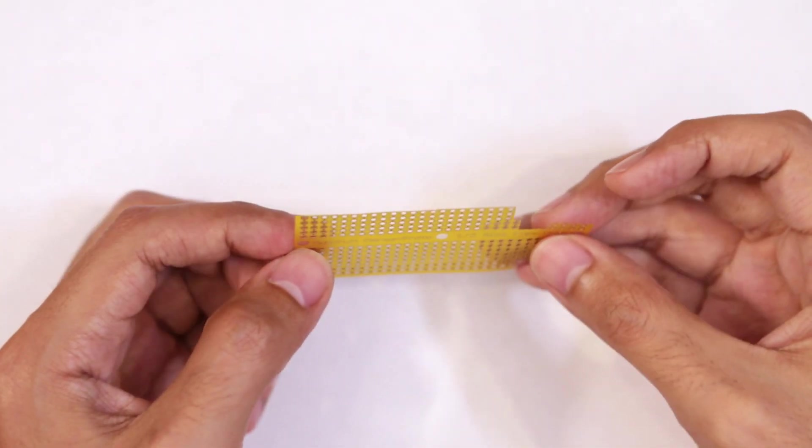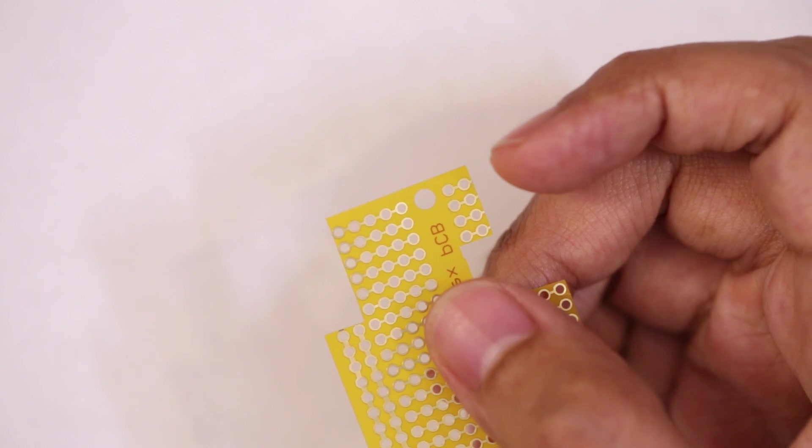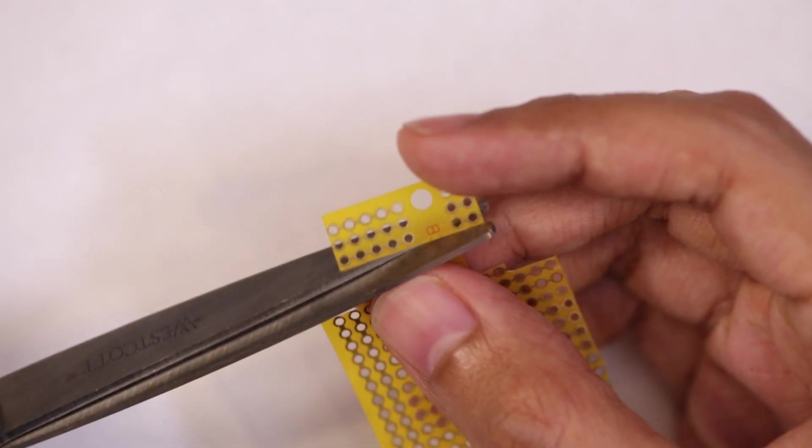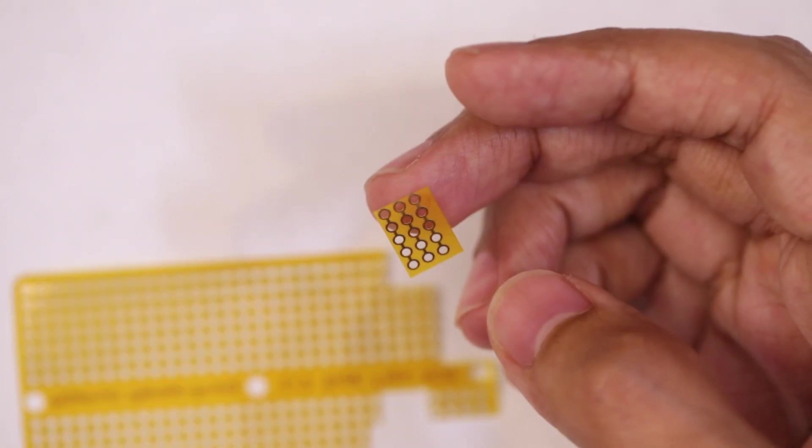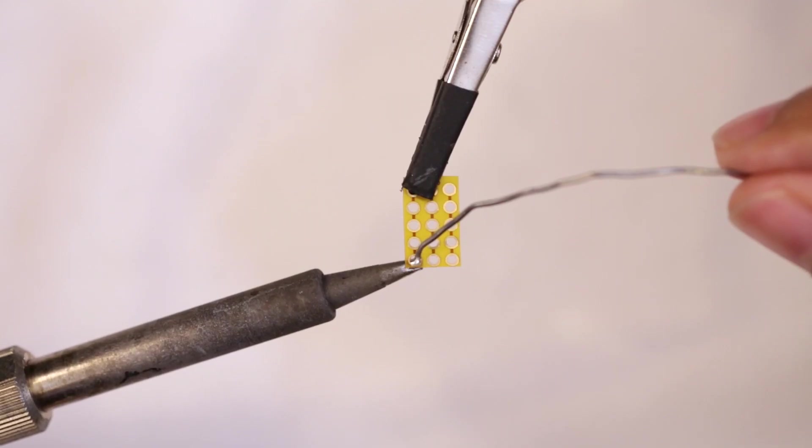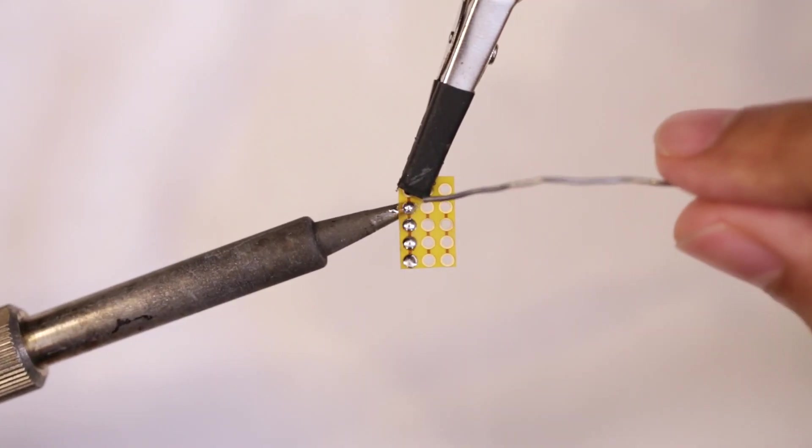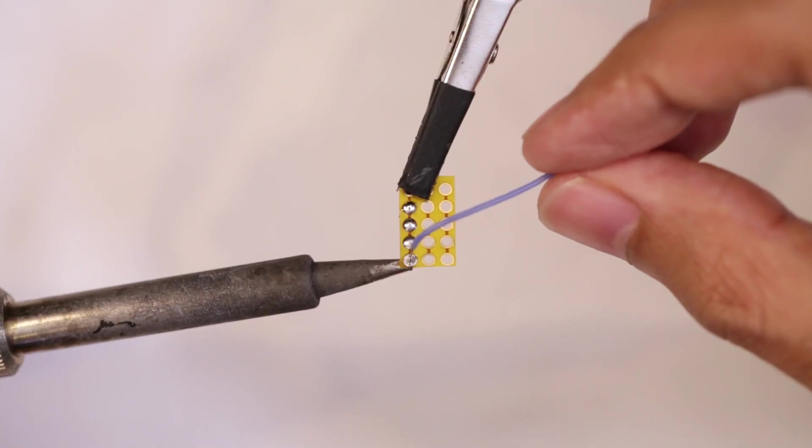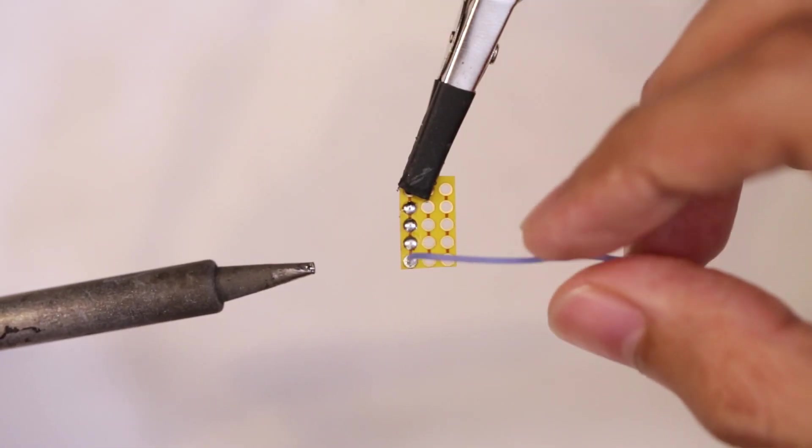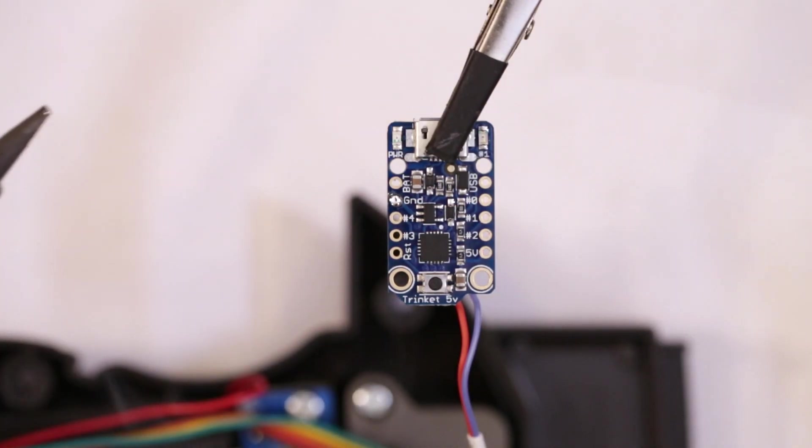These flexible breadboard PCBs are awesome for these projects that require a lot of power and ground connections. And since there's only a few on the Trinket, a small piece will go a long way. I proceeded to tin the pins on the flex PCB by adding a bit of solder. Then, I connected a short wire to one of the pins. I connected this wire to the ground pin on the Adafruit Trinket.